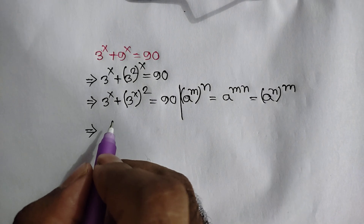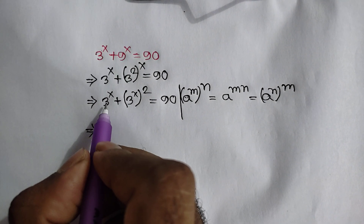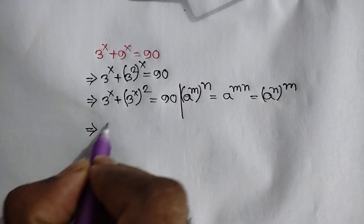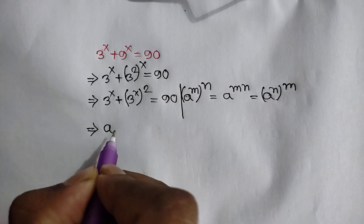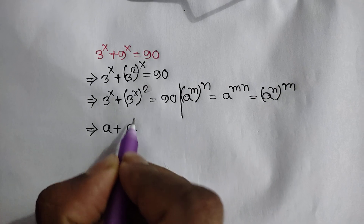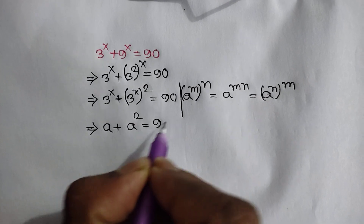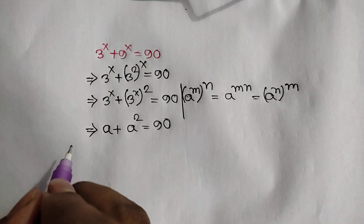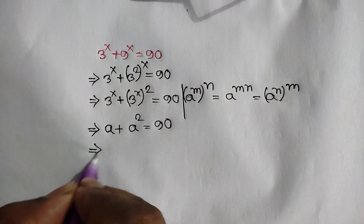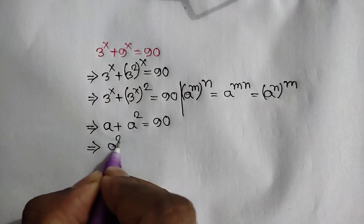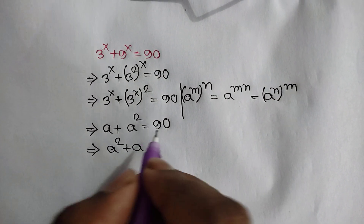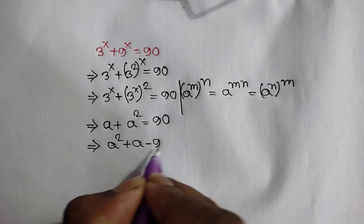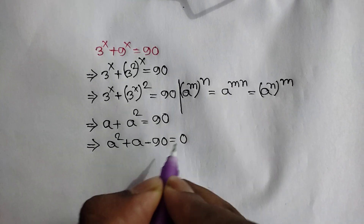If we let 3 to the power x equal a, then we get a plus a squared is equal to 90. Rearranging, a squared plus a minus 90 is equal to 0.